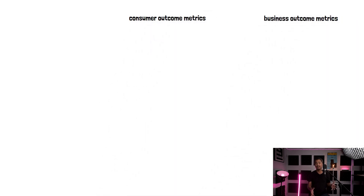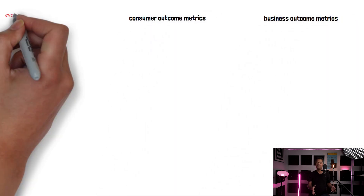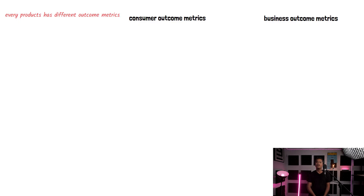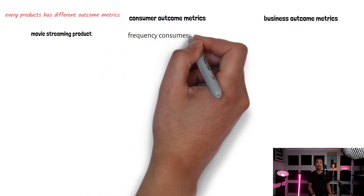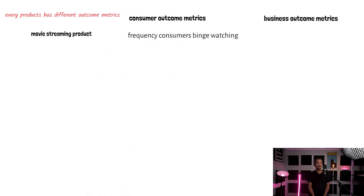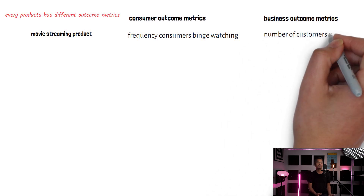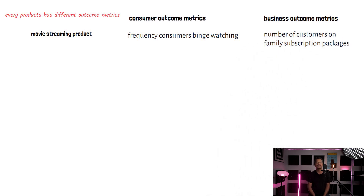When we talk about outcomes, there are outcomes for the consumer and also outcomes for the company who develops the product. Every product has different outcome metrics because every product exists in a different context and serves different consumers. For example, for a movie streaming product, one of the consumer outcome metrics may be the frequency of consumers binge-watching, while one of the business outcome metrics may be the number of customers on family subscription packages.